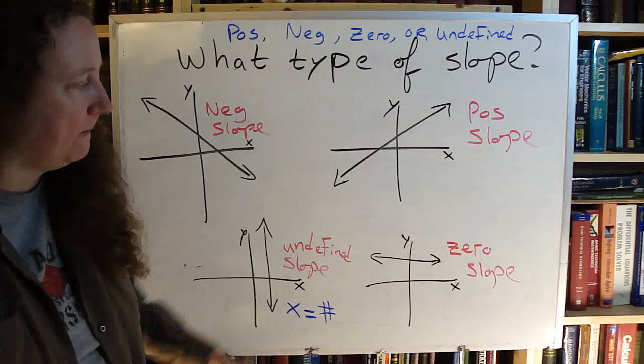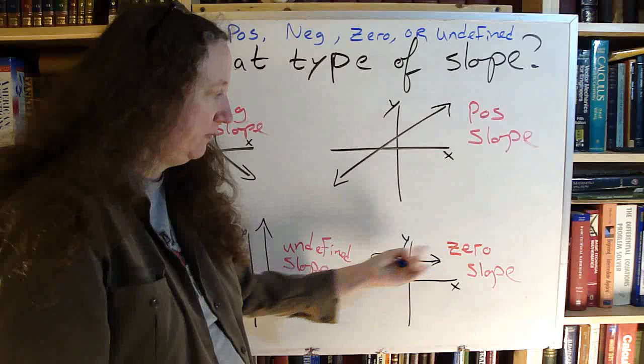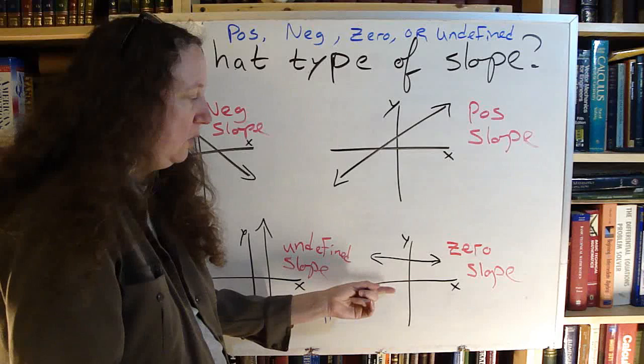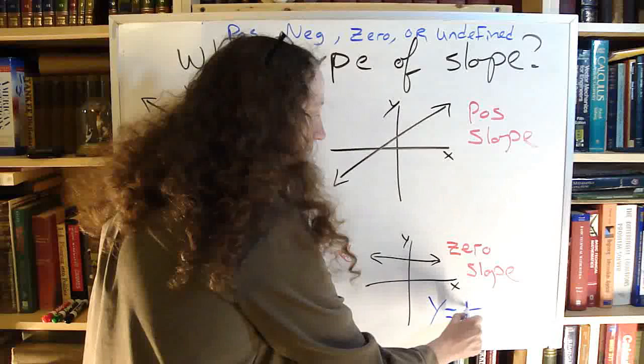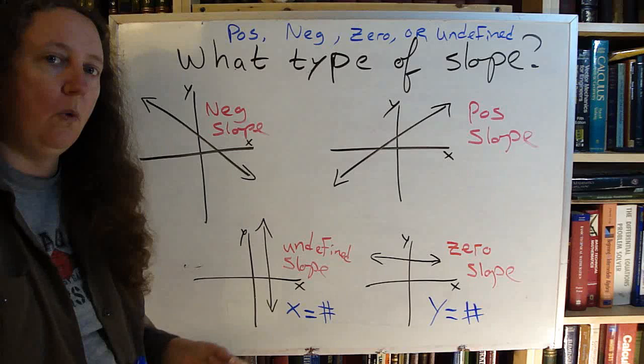Over here. Zero slope. Doesn't go up, doesn't go down, stays at zero. Stays the same as it goes across. This one is going to be y equals a number. Horizontal line y equals a number.